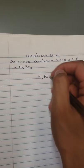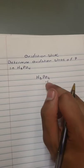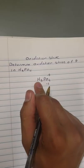We know that oxygen has an oxidation number of minus 2. So minus 2 times 4 is going to be minus 8.